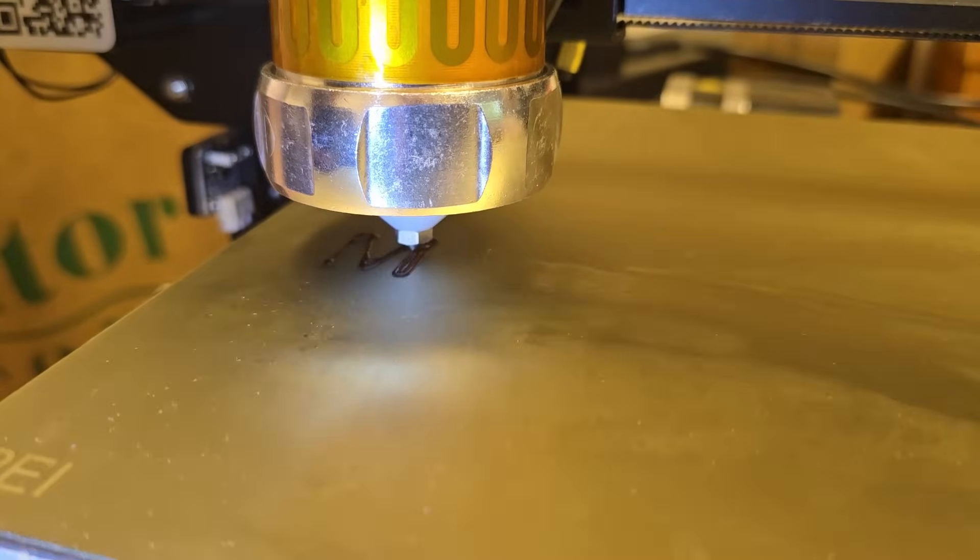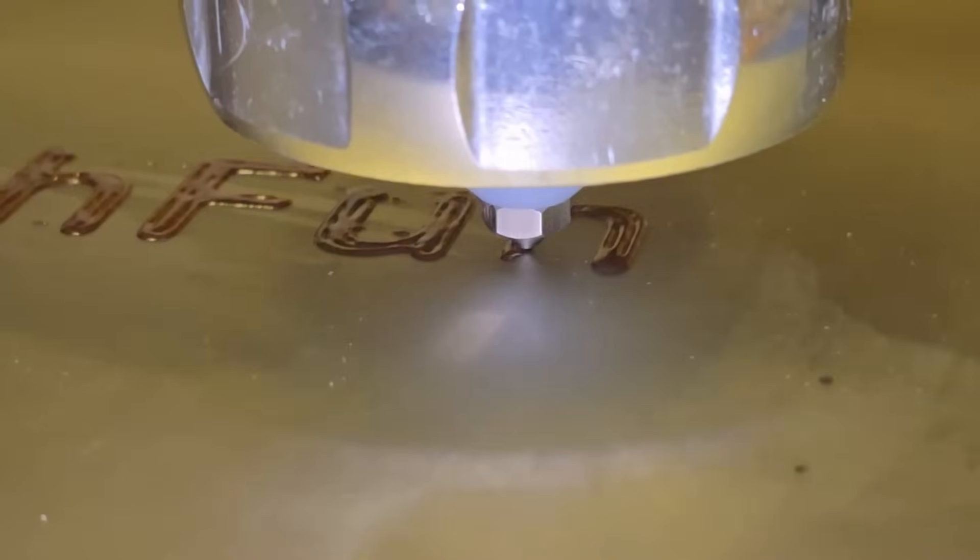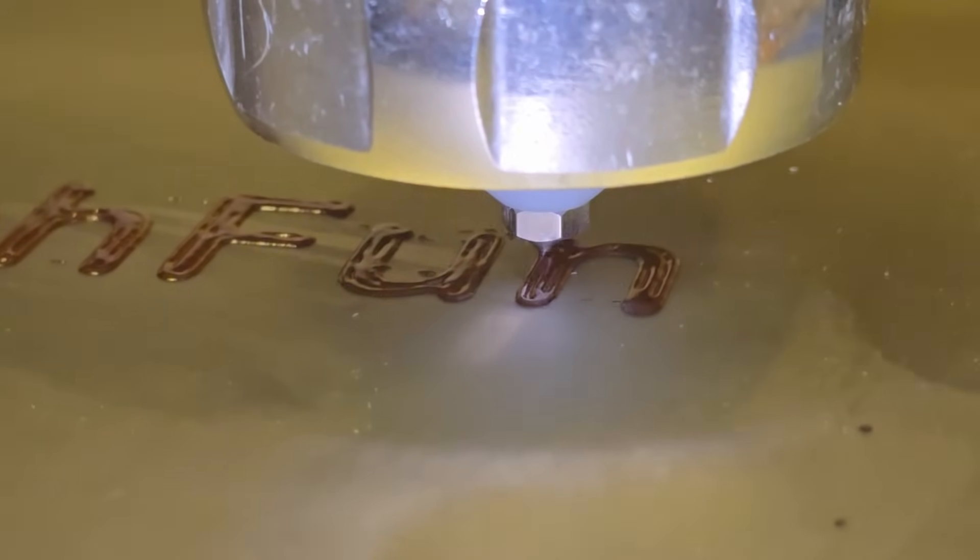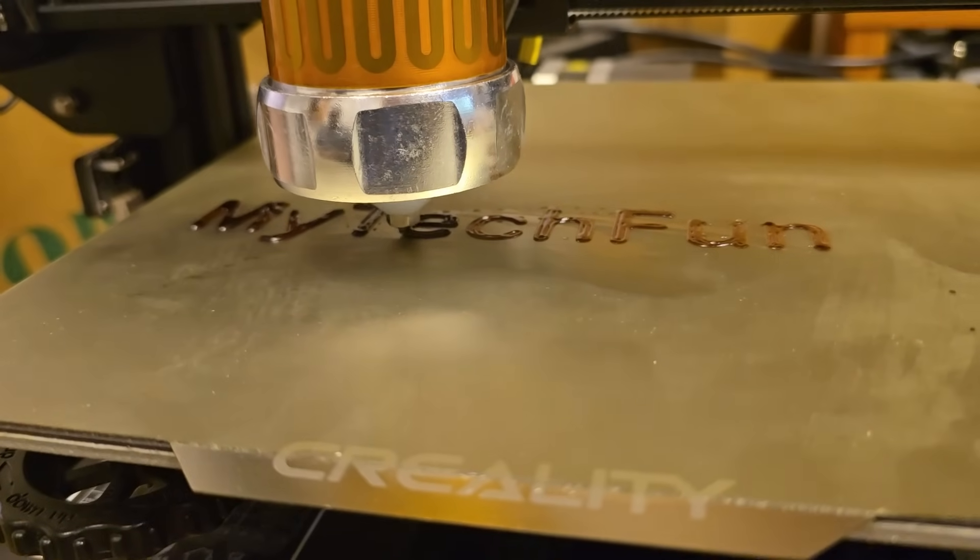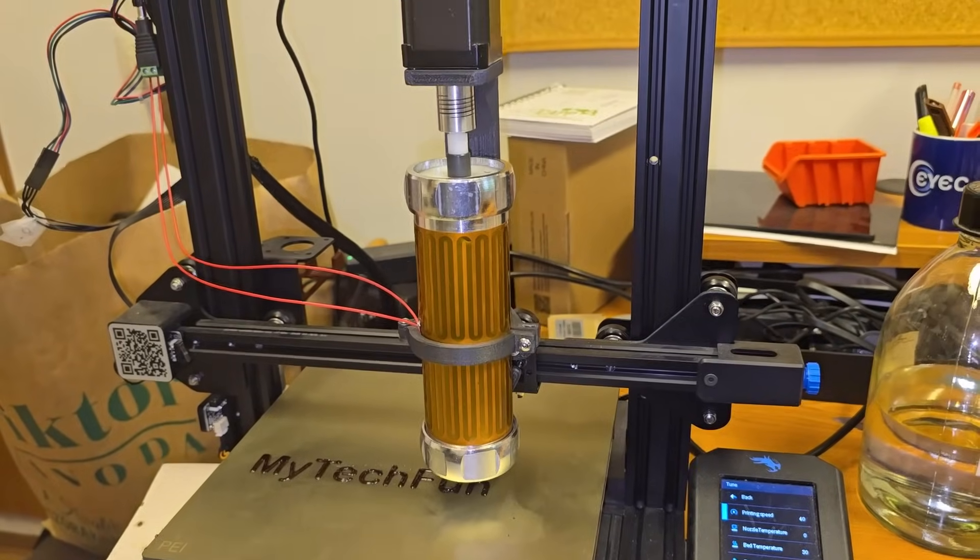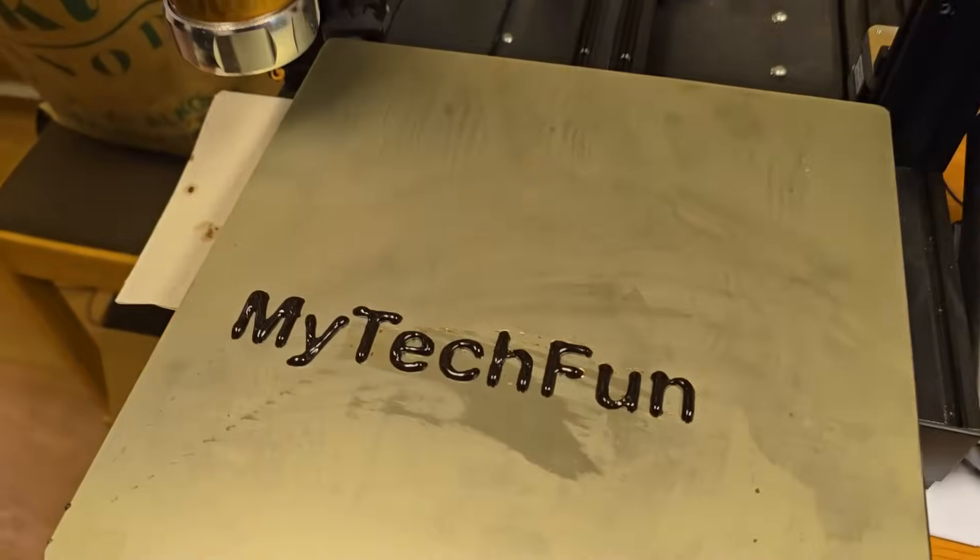And the real fun started here. I just wrote my TechFun text in Tinkercad, sliced it, copied the G-code to the SD card, and the printing started. This was approximately 20 minutes of printing.